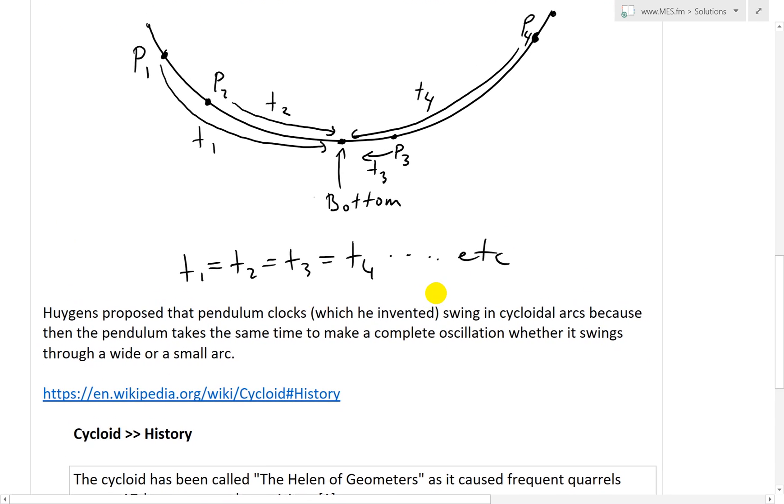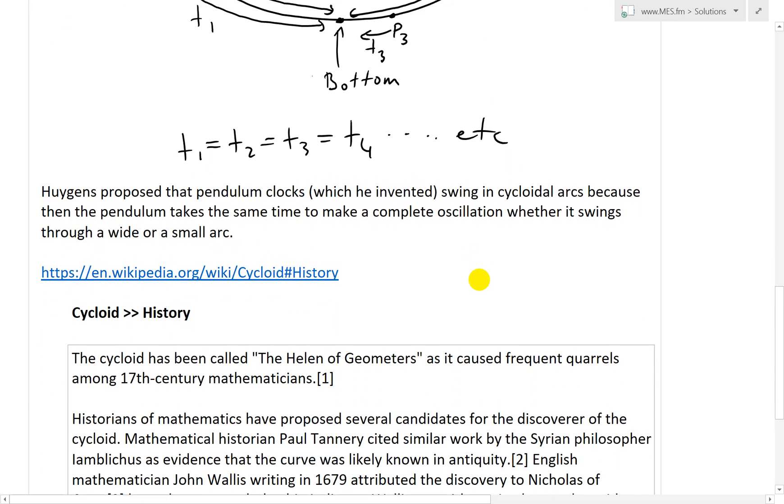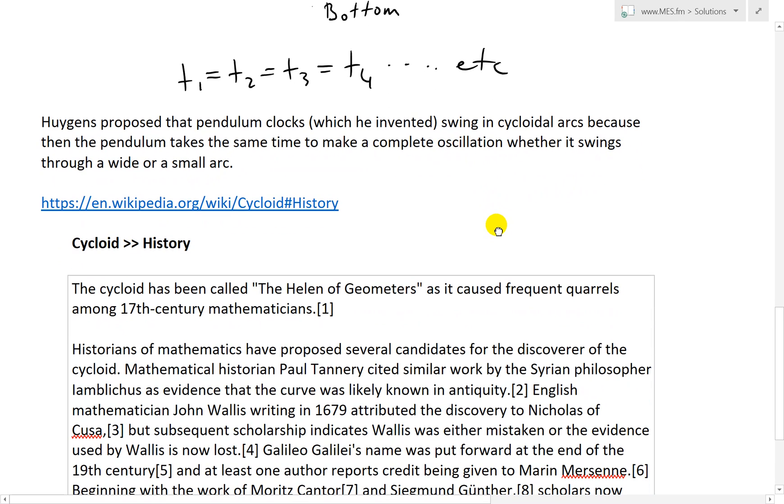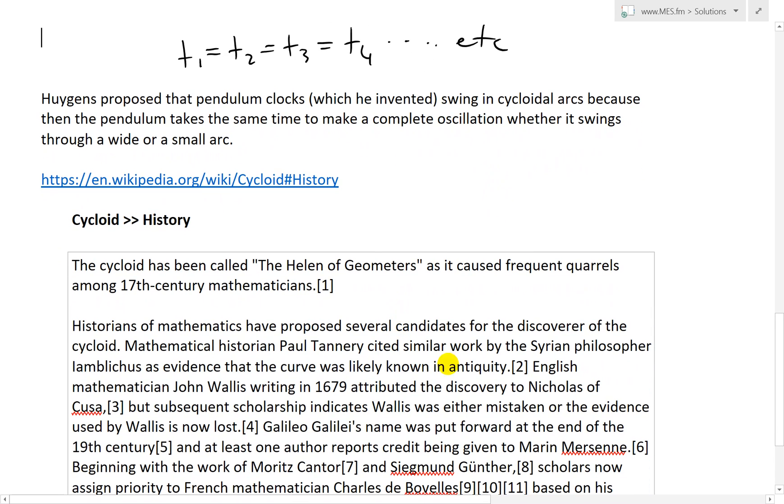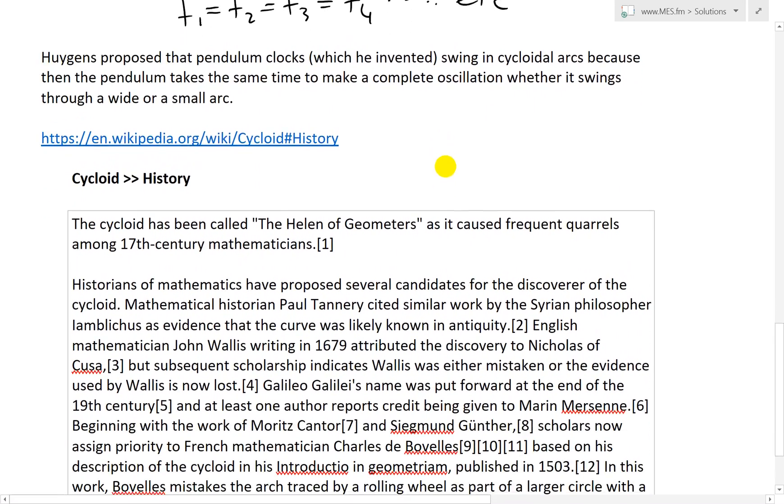And now a good application of this phenomenon is basically pendulum clocks. So Huygens proposed that pendulum clocks, which he also invented, swing in cycloidal arcs because then the pendulum takes the same time to make a complete oscillation, whether it swings through a wide or a small arc. This means you can scale it up pretty easily and you're still going to get the exact same ticks of a clock or seconds.